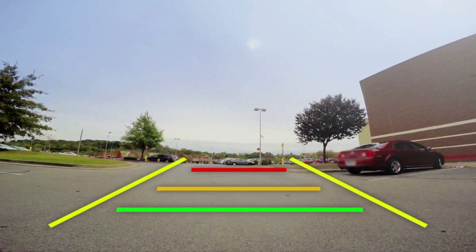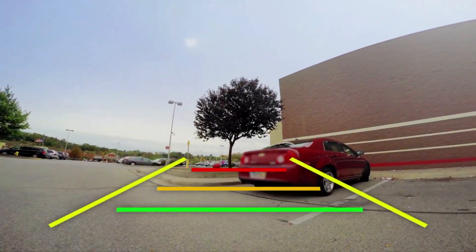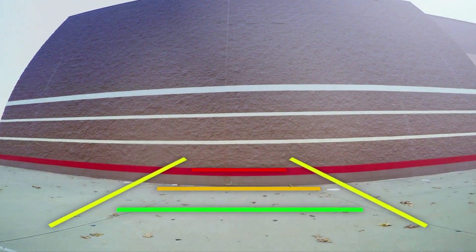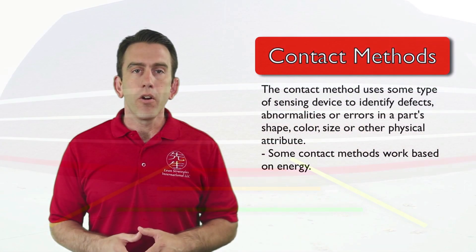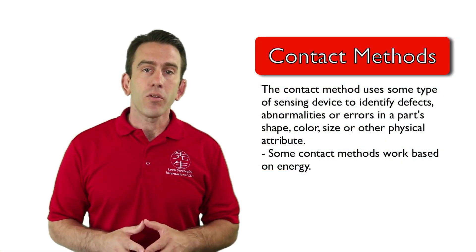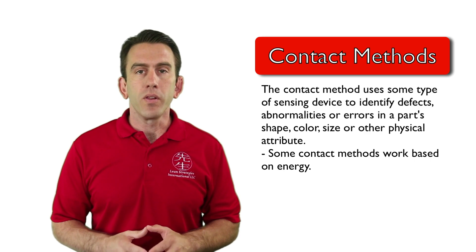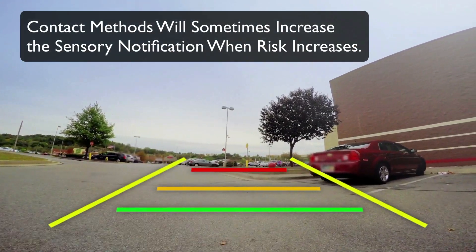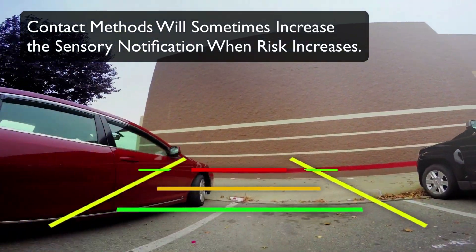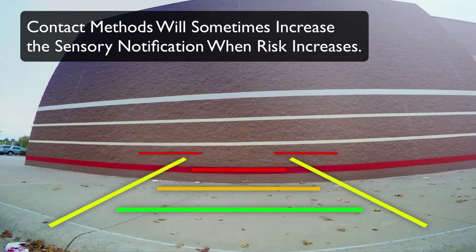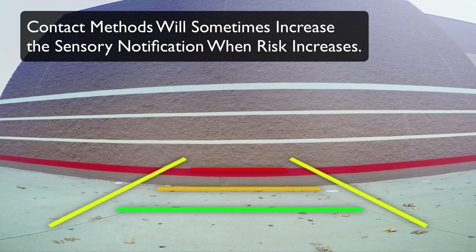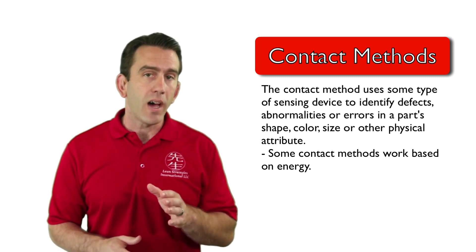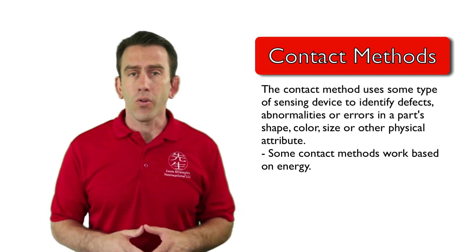For example, many cars will beep when they are backing up. If the car gets too close, some cars will automatically stop. Other contact methods work based on energy. These energy-based contact methods sense when something is not correct. In the same example of a car, vehicles will oftentimes increase the rate of beeping when it gets closer to hitting something. Contact methods may also identify errors or defects using shape, size, color, or other physical attribute.